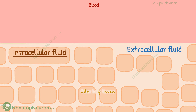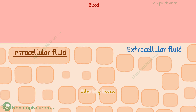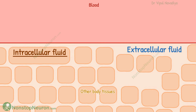Let's talk about the intracellular fluid compartment. We have about 100 trillion cells in our body, and they all have fluid inside. In the literal sense, we have 100 trillion tiny intracellular fluid compartments. But since the composition of fluid in all the cells is almost the same, all these tiny compartments are collectively considered one big single intracellular fluid compartment.